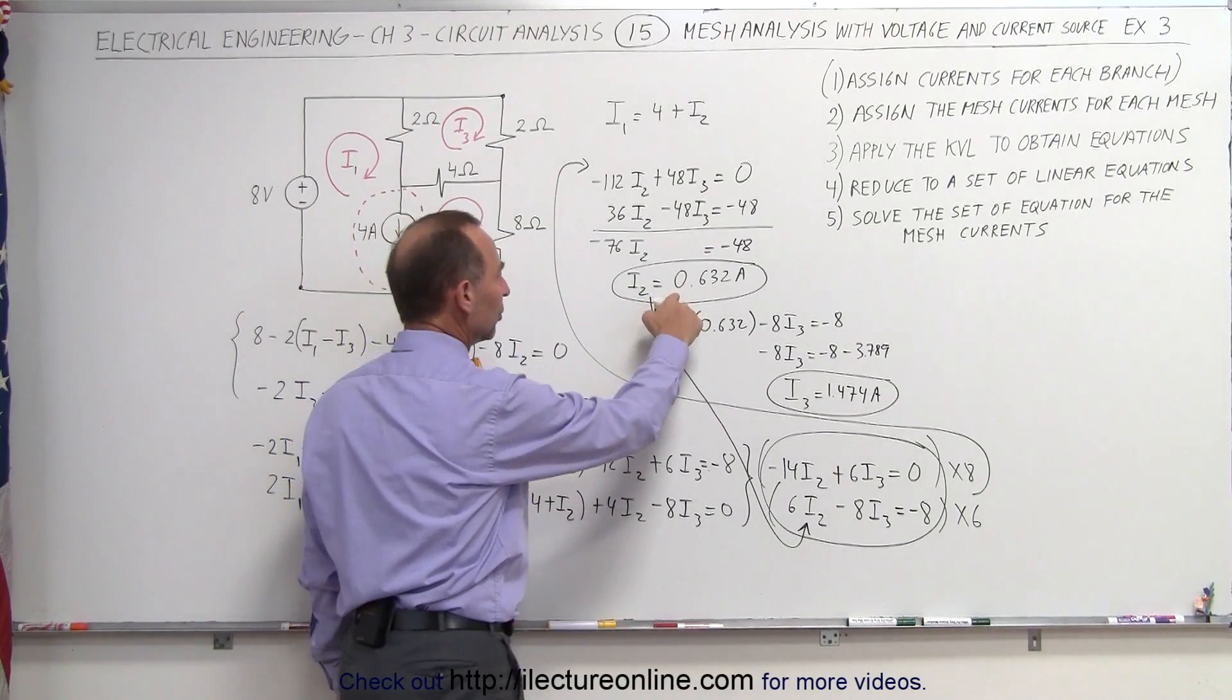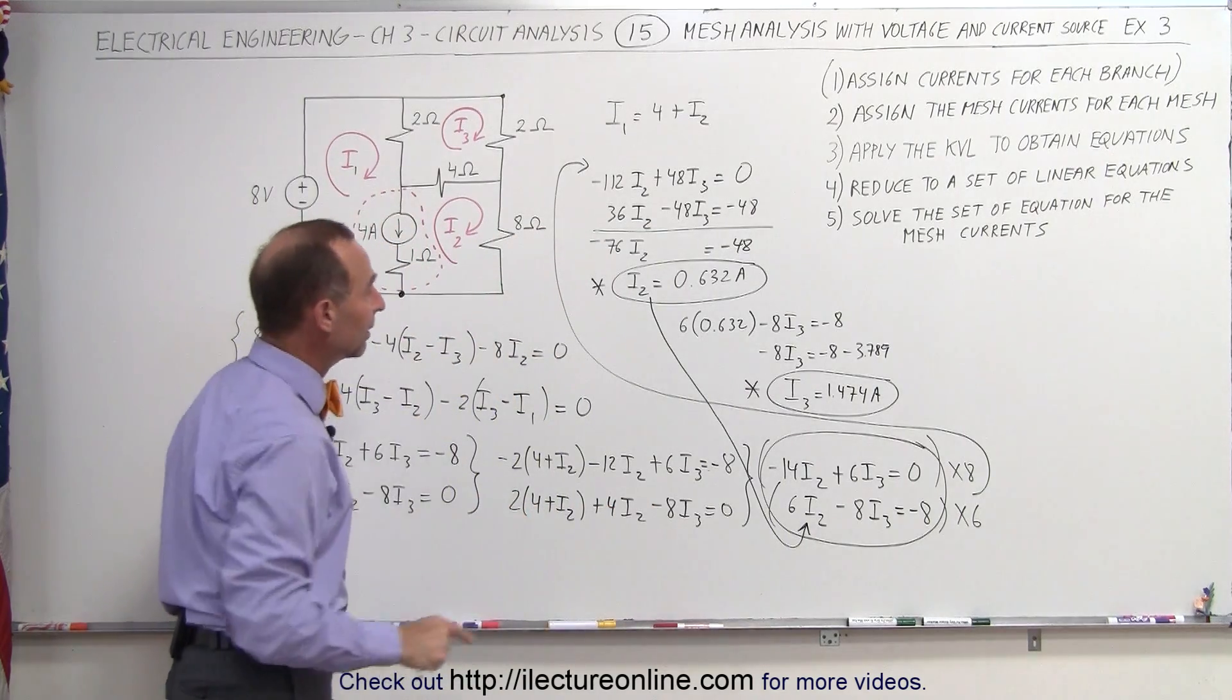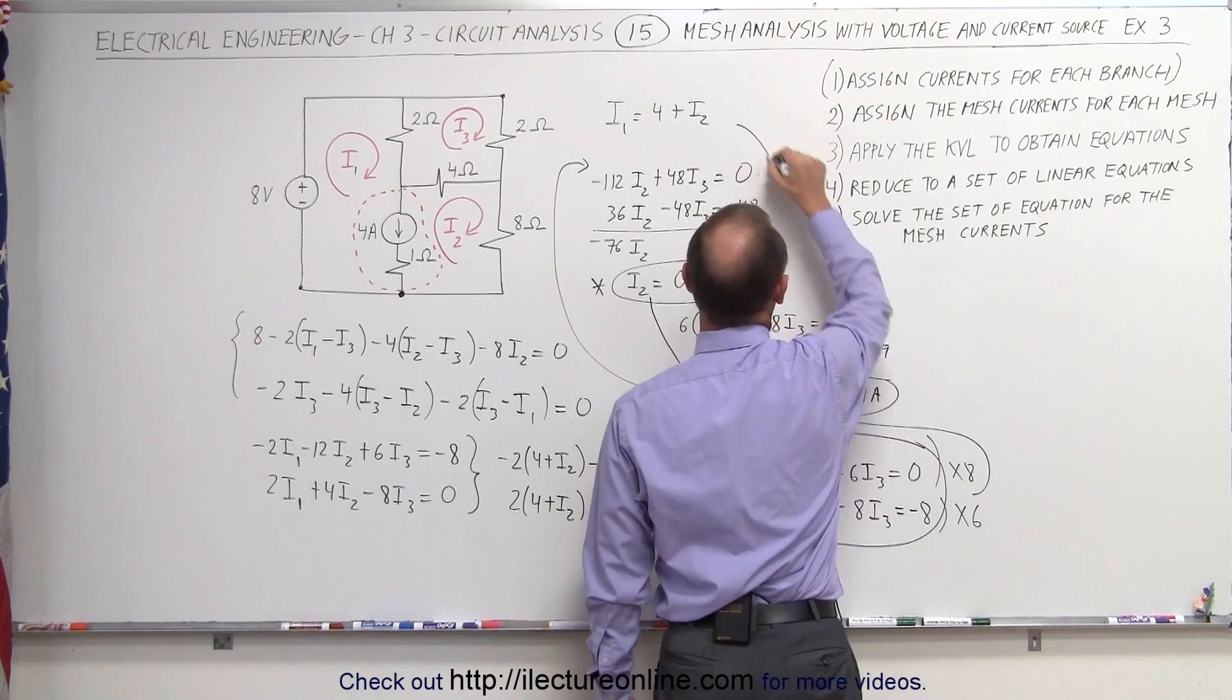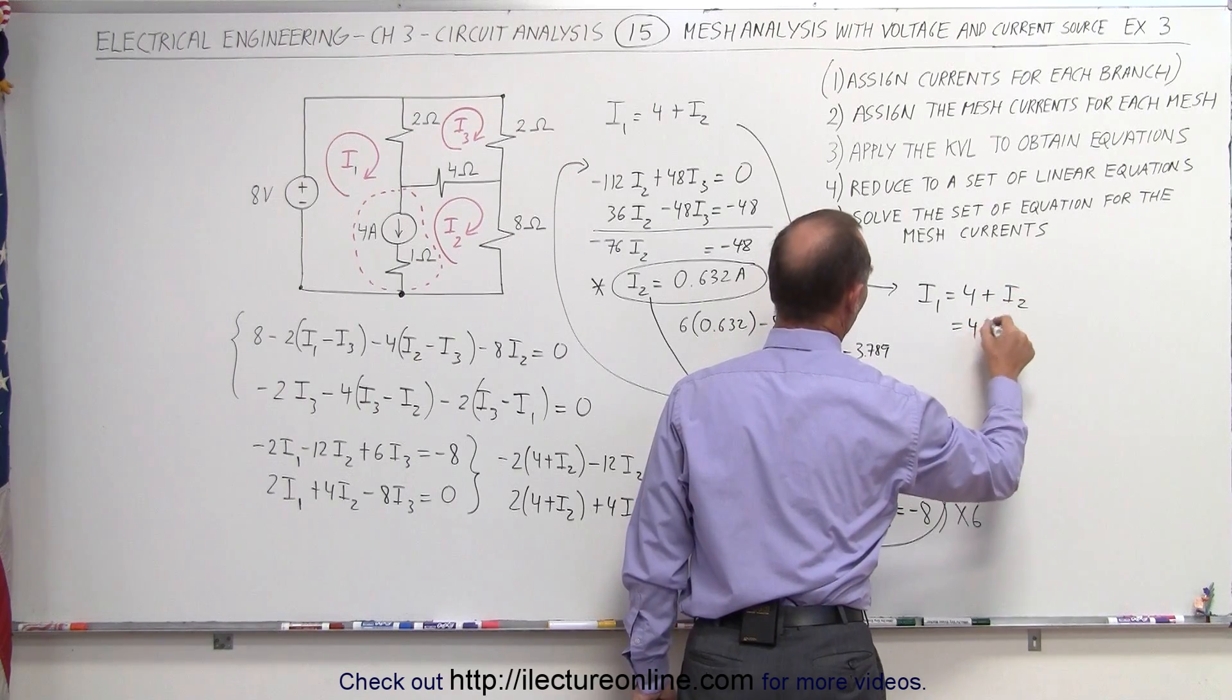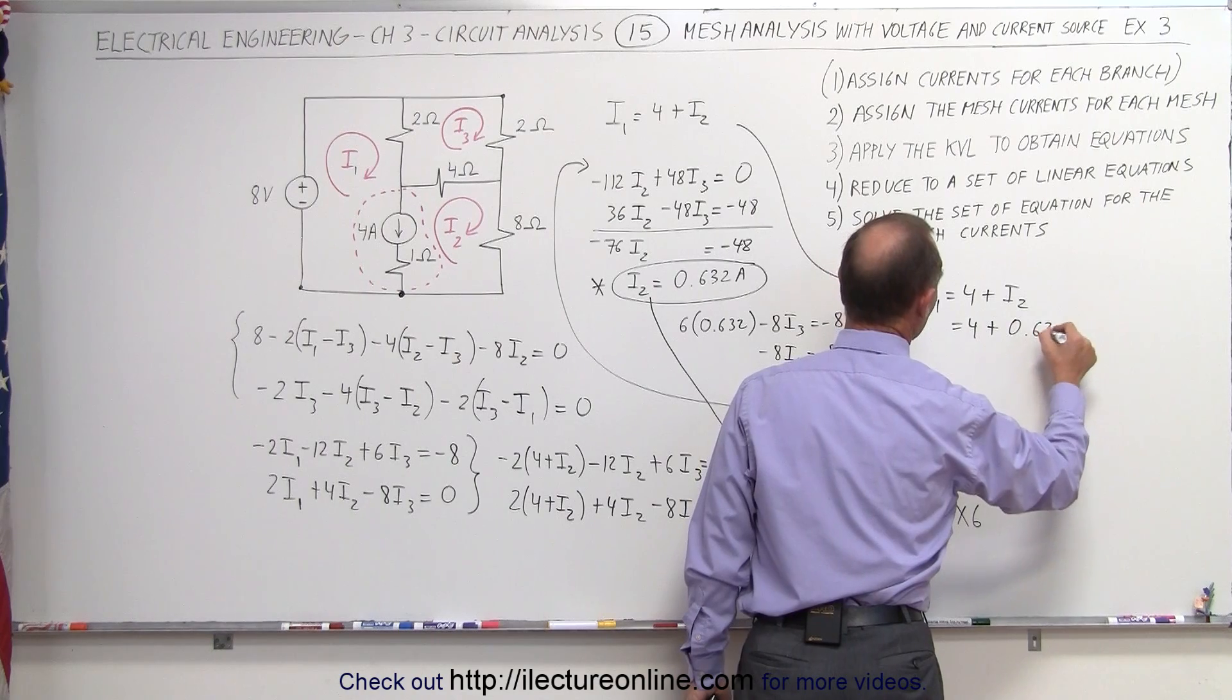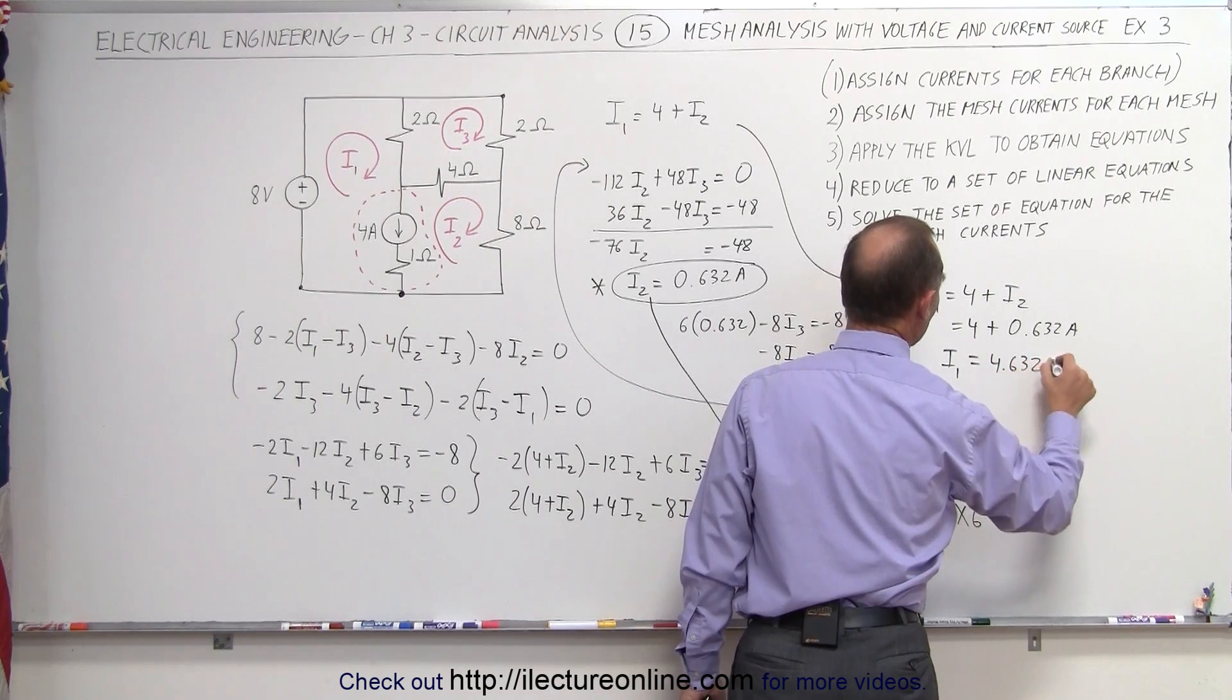So now we have I2 right here, we have I3 right here, all we need now is I1, and here I can go and write I1 as 4 plus I2. Coming down here, we have I1 equals 4 plus I2, which is 4 plus 0.632 amps, which means that I1 is equal to 4.632 amps.